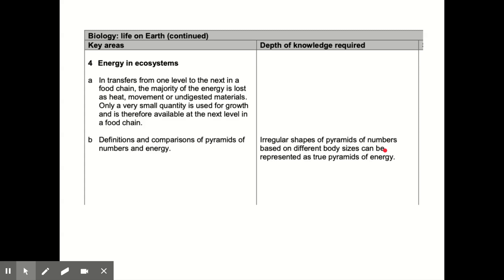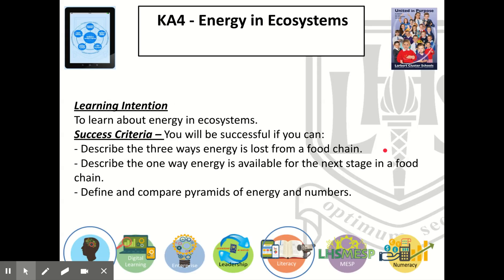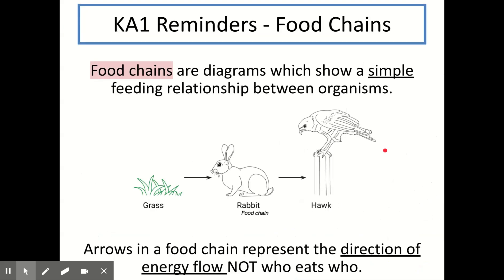This is a really short key area, but it's really important that you go back and revise it. As usual, there'll be some questions after each part so you can be sure you're ready to move on. Our learning intention today is to learn about energy and ecosystems. By the end of the lesson, you'll be able to describe the three ways energy is lost from a food chain, describe the one way energy is available for the next stage, and define and compare pyramids of energy and pyramids of numbers.